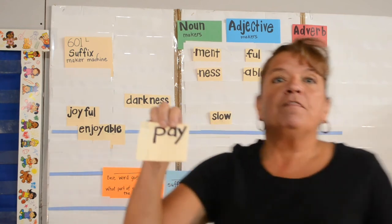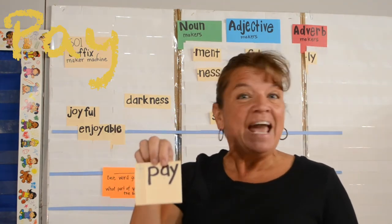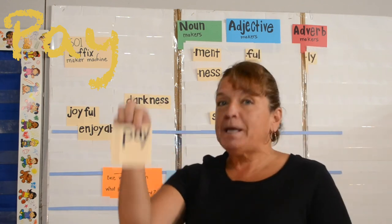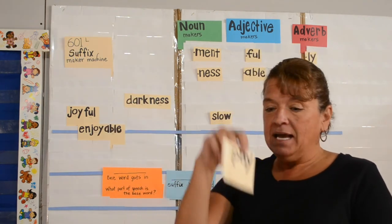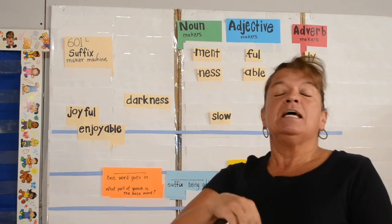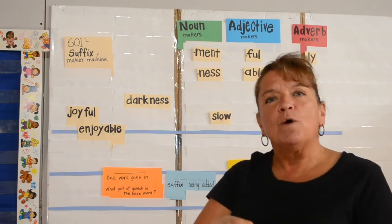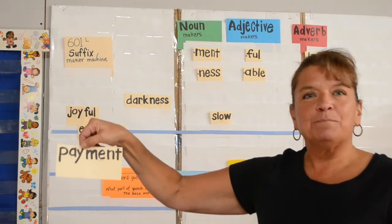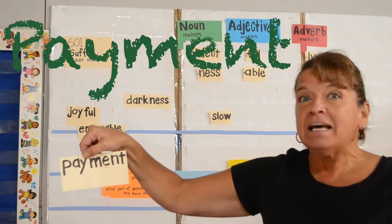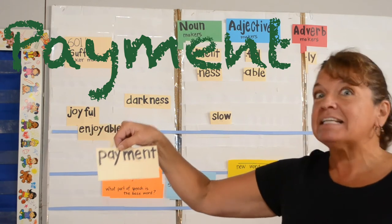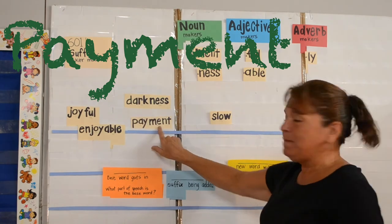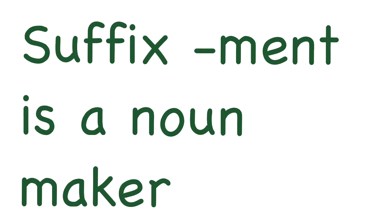Let's take the base word pay. Pay is a verb. We're going to put that base word pay into the suffix maker machine, and inside we're going to add the suffix M-E-N-T. Out comes the new word payment — now the word payment is a noun. So we say that the suffix M-E-N-T is a noun maker.